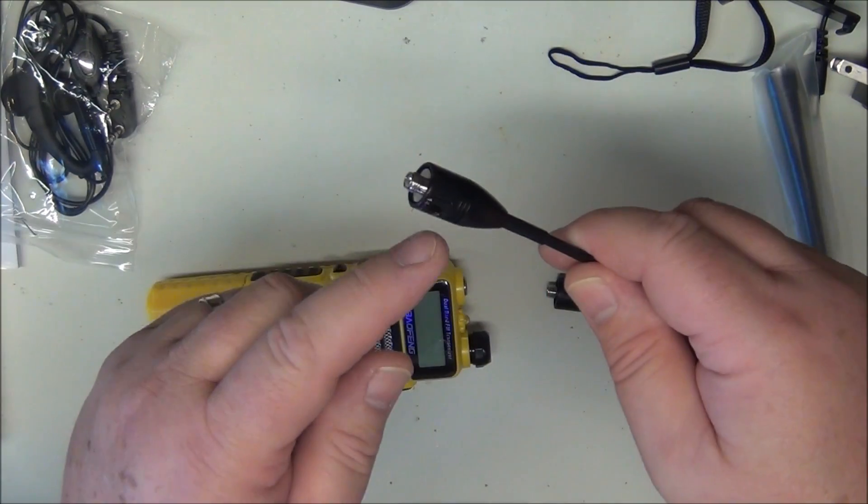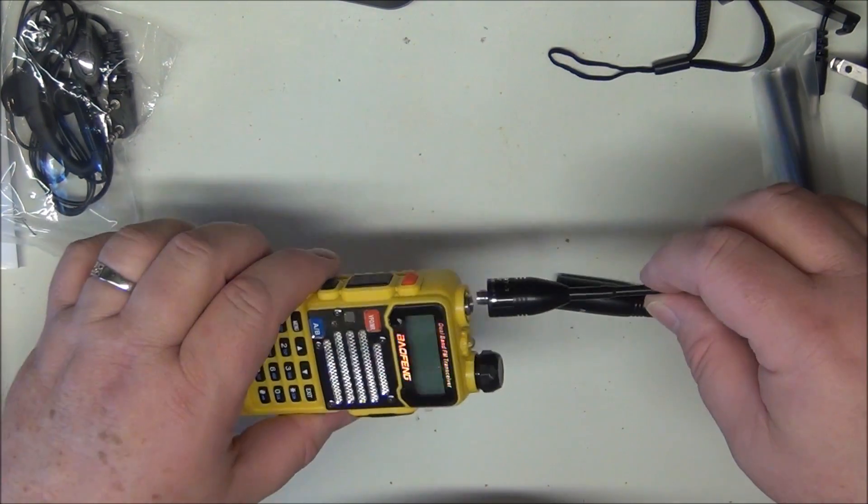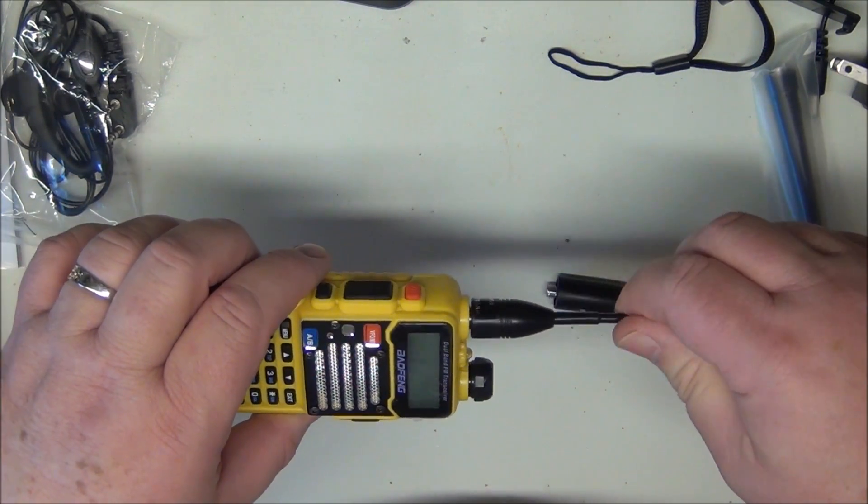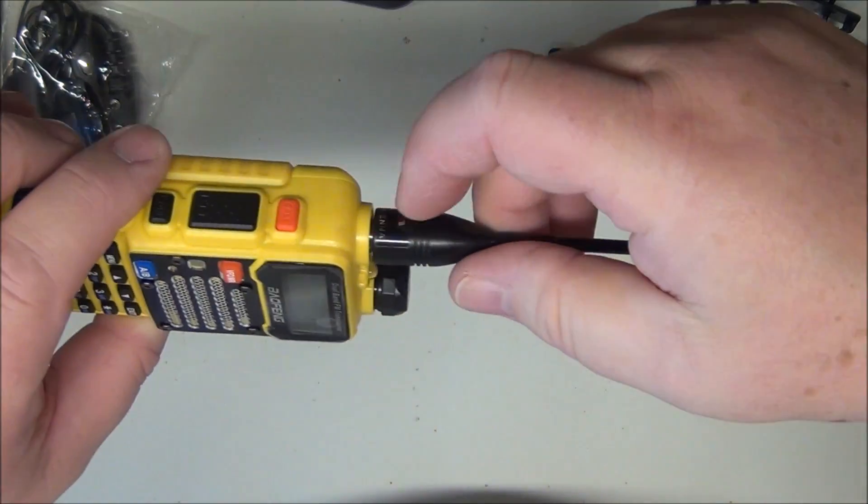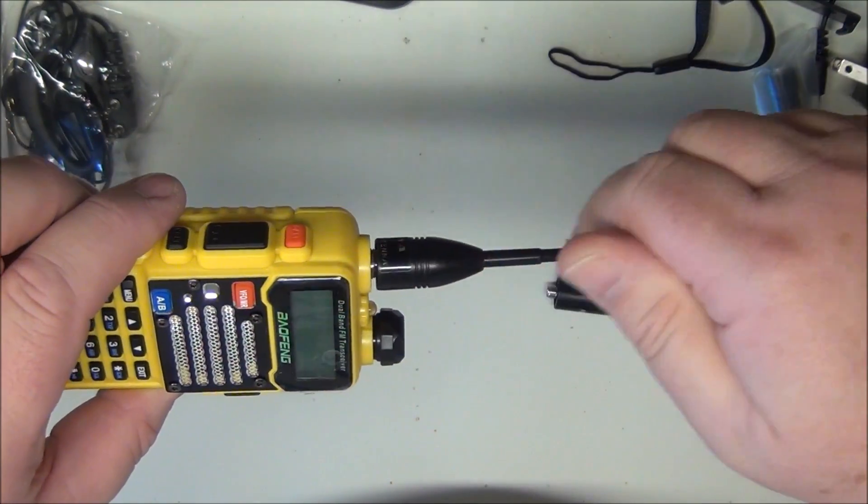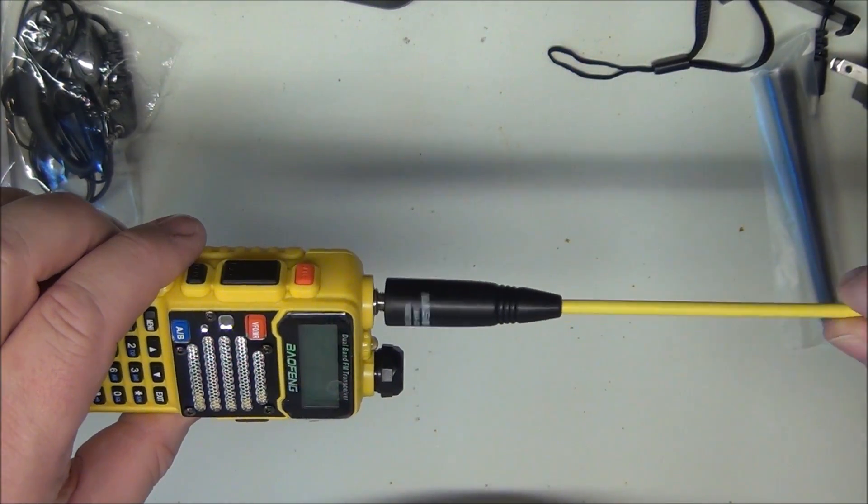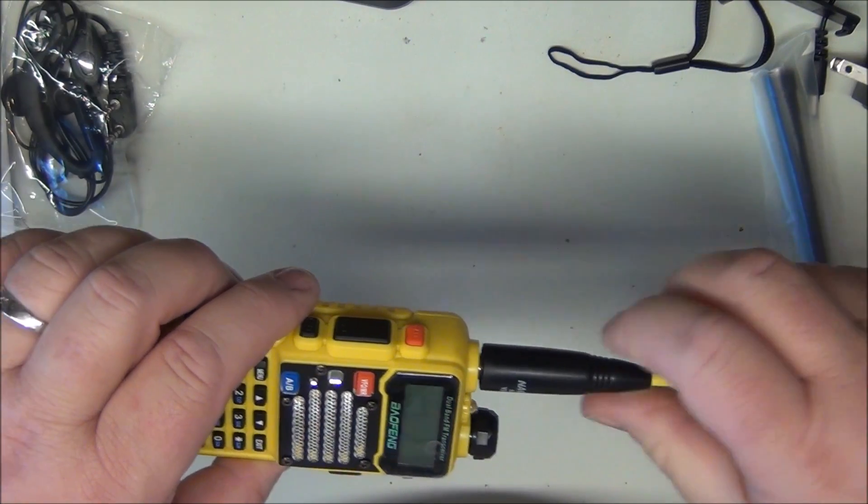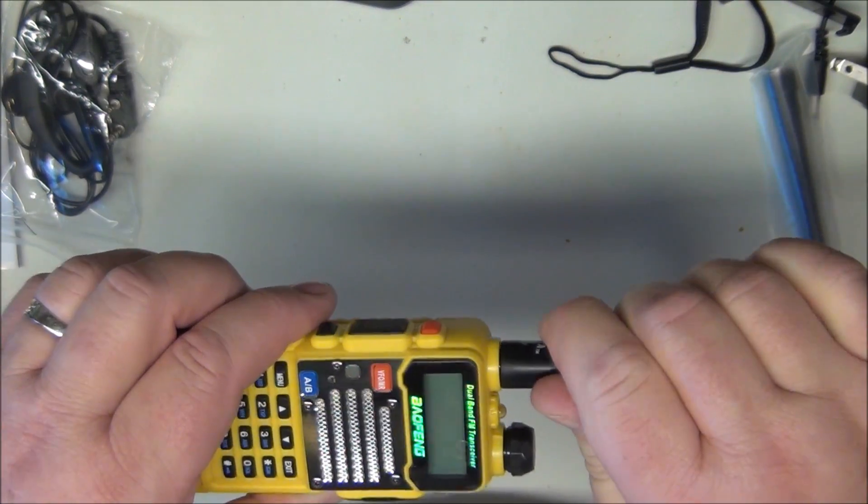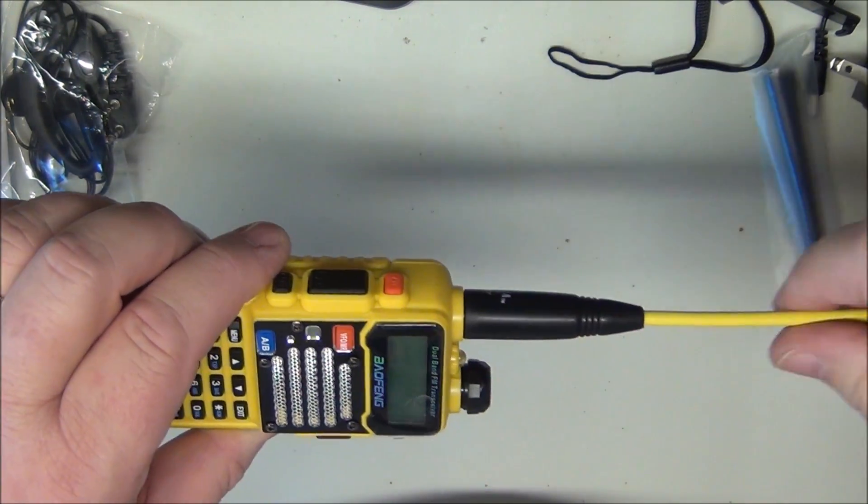Now what I usually do is stick a little piece of rubber in there, but it leaves a pretty good size gap. The new Nagoya seems to fit just a little bit better. A teeny tiny little gap, but not very much.